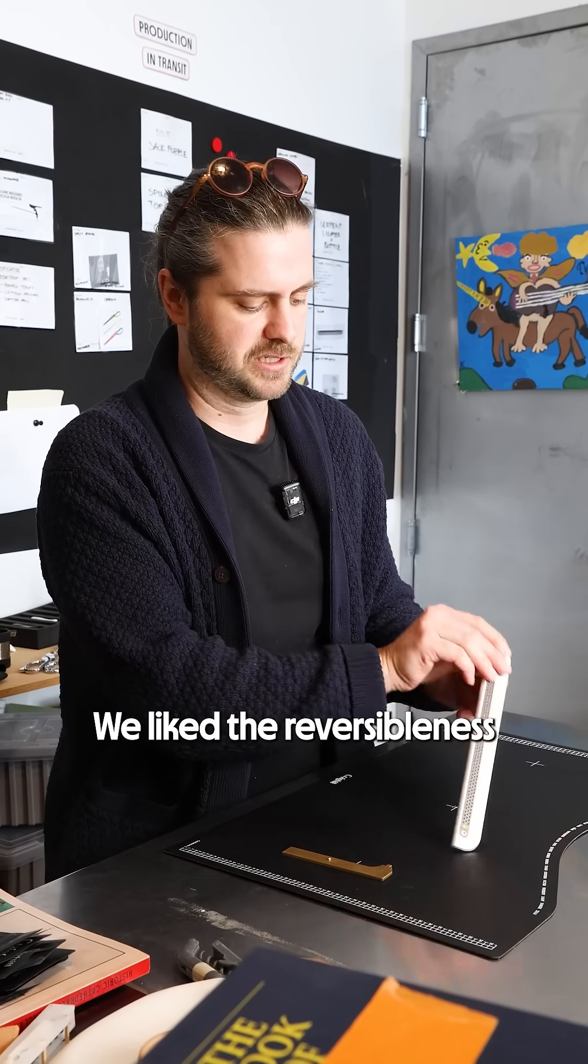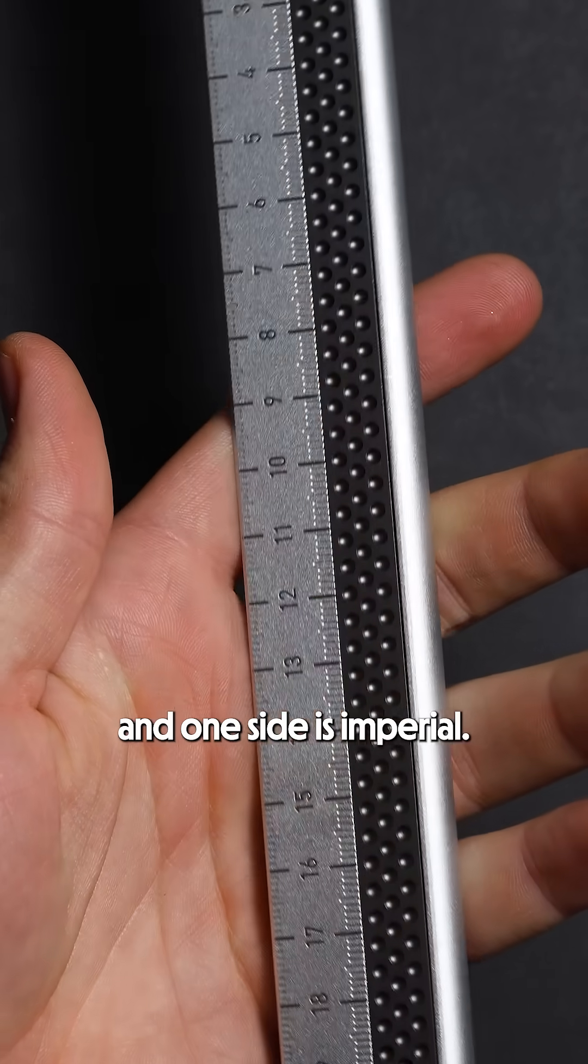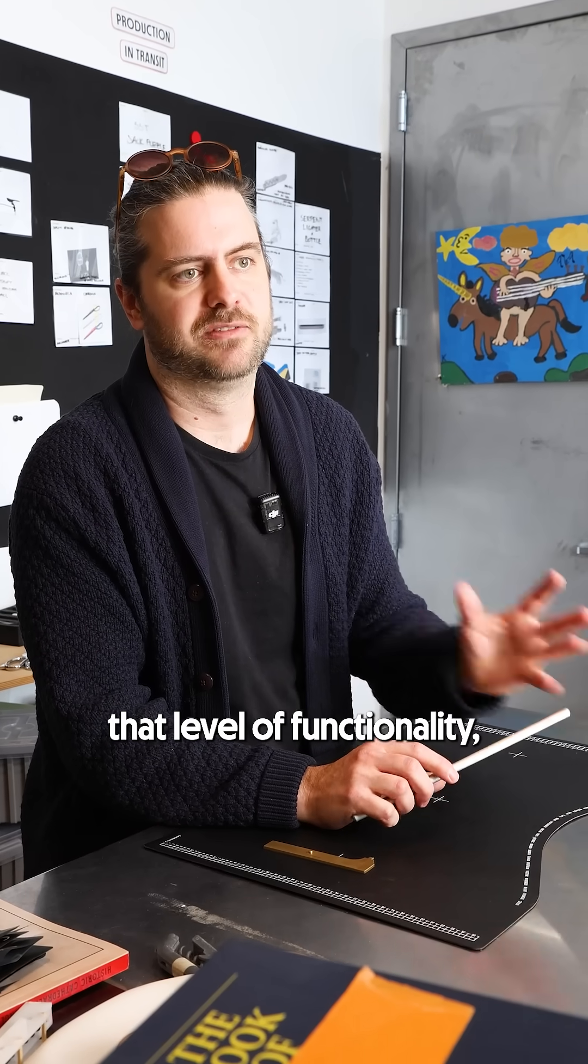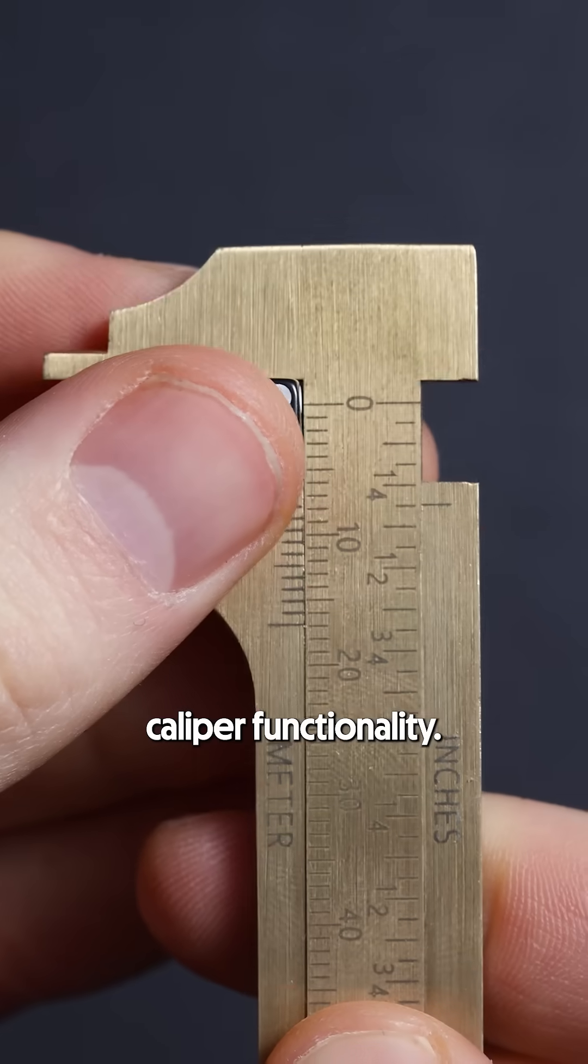We liked the reversibleness of most rulers where one side is metric and one side is imperial. We didn't want to sacrifice that level of functionality but we wanted to introduce caliper functionality.